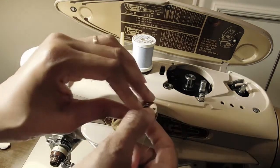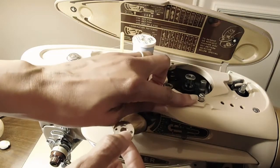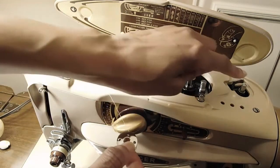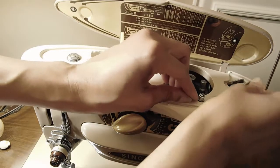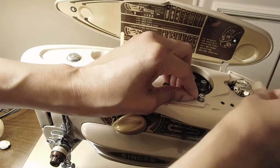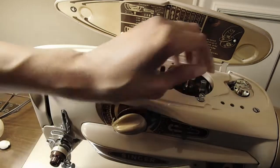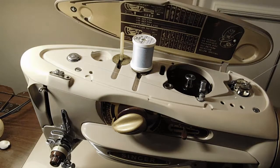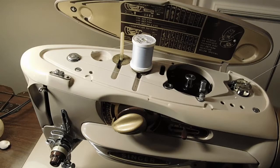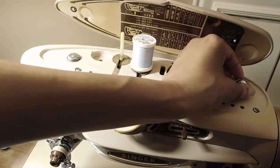I will bring the thread around this post and onto the bobbin spindle. I will pull out about seven inches of thread and secure the latch.